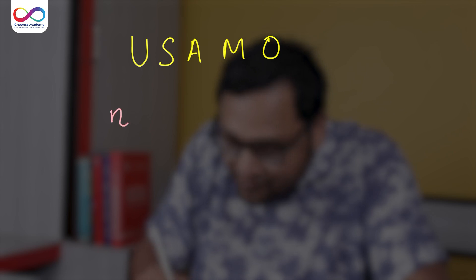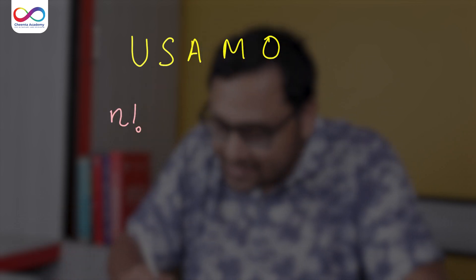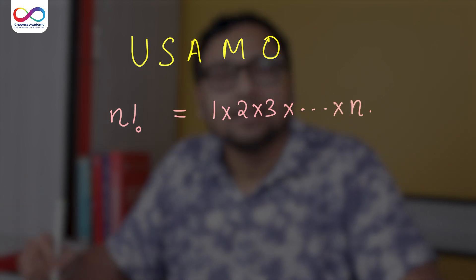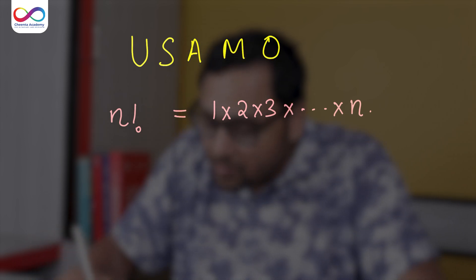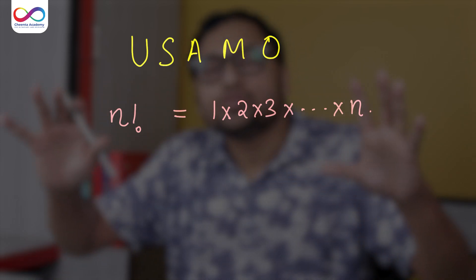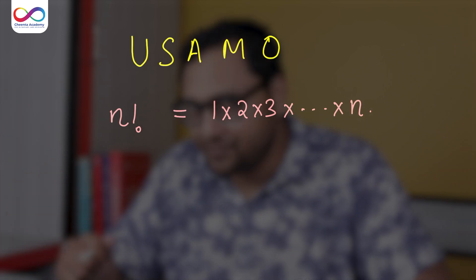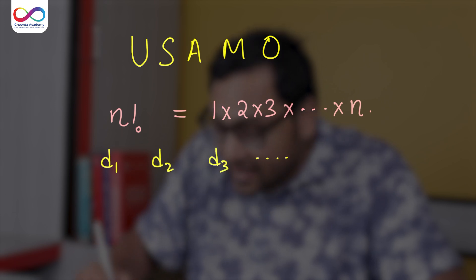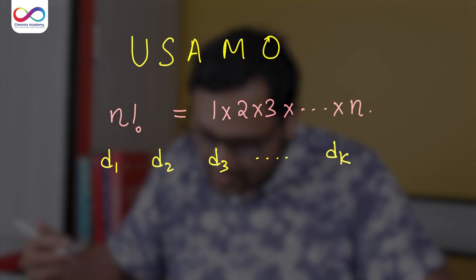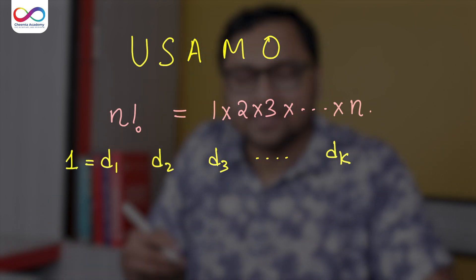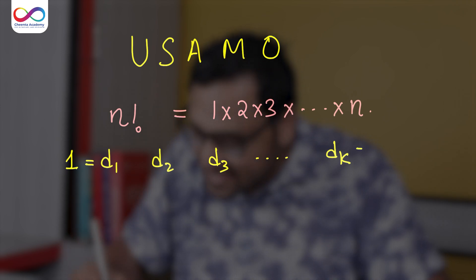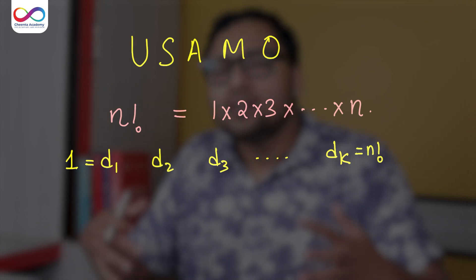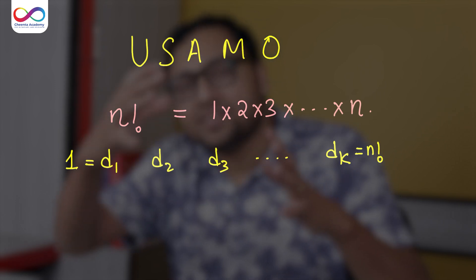Let's talk about the problem first. We have N factorial — you know what N factorial is? It is simply 1 times 2 times 3 up to N. The problem says: list out all the divisors of N factorial — D1, D2, D3 — arranged in ascending order, such that D1 is 1 and DK is the last number, which is N factorial itself.